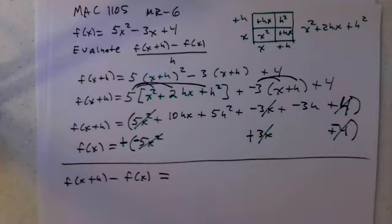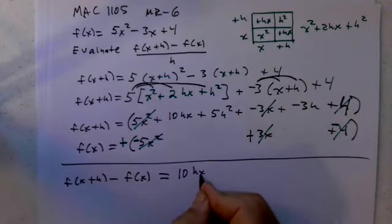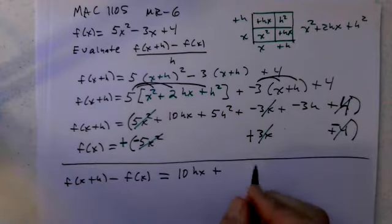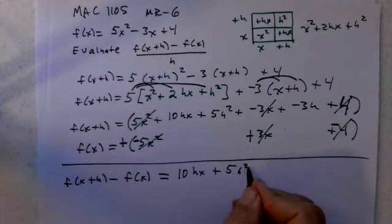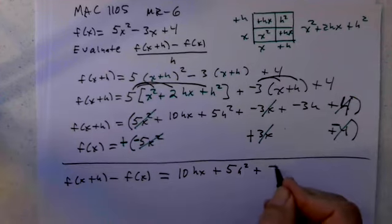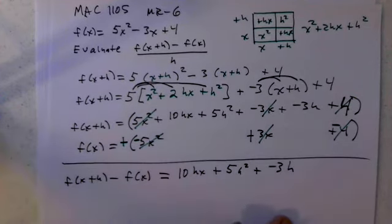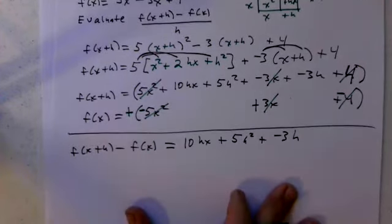And I am left with 10hx plus 5h² plus negative 3h, or minus 3h. That is f(x+h) minus f(x).